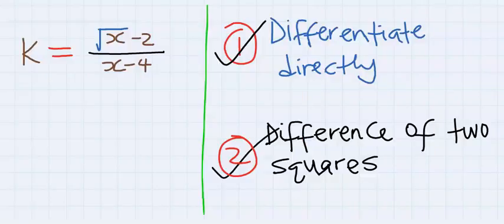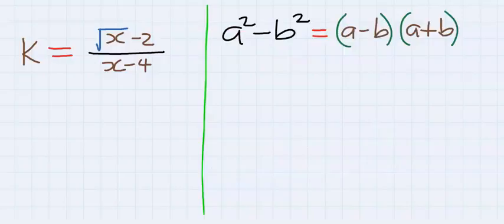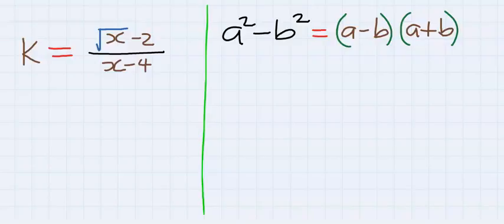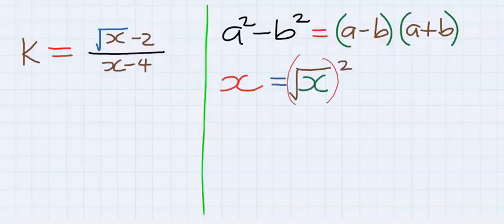We are going to see that both of them will give us the same answer. Let's start by using difference of two squares. In difference of two squares, a squared minus b squared is equal to (a minus b)(a plus b). Subsequently, x is the same as square root of x